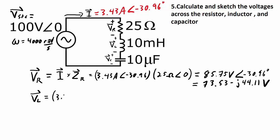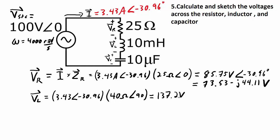The voltage across the inductor is the current — 3.43 at minus 30.96 degrees — times the inductor impedance of 40 ohms at 90 degrees. The magnitude is 3.43 times 40, giving 137.2 volts, and the phase angle is negative 30.96 plus 90 degrees, giving 59.04 degrees. Converting to rectangular coordinates: 137.2 times cosine and sine of 59.04 degrees gives 70.58 plus J117.65 volts.